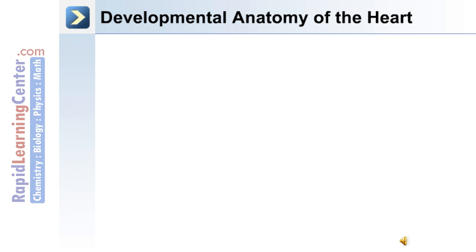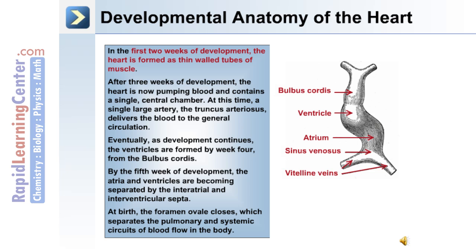The developmental anatomy of the heart: in the first two weeks of development, the heart is formed as thin-walled tubes of muscle. After three weeks, the heart is pumping blood and contains a single central chamber. At this time, a single large artery known as the truncus arteriosus delivers the blood to the general circulation. As development continues, the ventricles are formed by week four from the bulbous cordis. By the fifth week of development, the atria and ventricles become separated by the interatrial and interventricular septa.